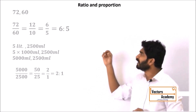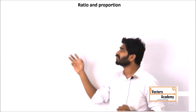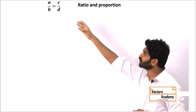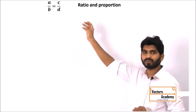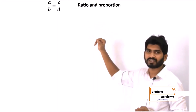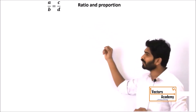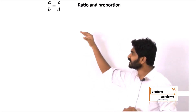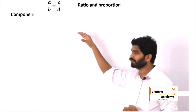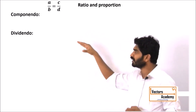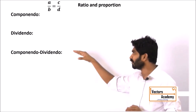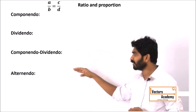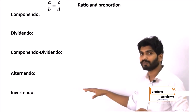Moving further, let us understand the different properties of ratios. Suppose there is a ratio A/B equal to C/D. There are five different properties which can be applied: first is Componendo, second is Dividendo, third is Componendo and Dividendo, fourth is Alternendo, and the last one is Invertendo.